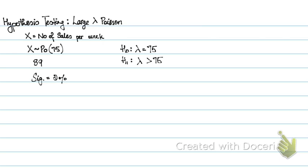Now, using the central limit theorem, we can say that X can follow a normal distribution because our lambda is greater than 30. Our lambda is 75.